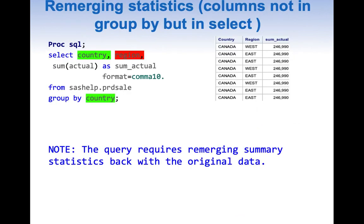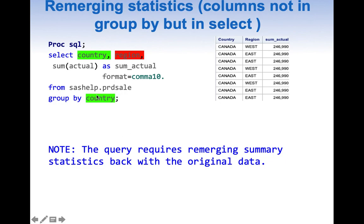Now let us understand re-merging summary statistics with GROUP BY. This happens when columns are not in GROUP BY but they are in SELECT. In this example, we are doing SELECT country, region, and also applying an aggregate function on actual from sashelp.prd table GROUP BY country. Only country is in both GROUP BY and SELECT, but region is an extra column that does not belong to GROUP BY. When we run this kind of query, the aggregated value is repeated and we get a note saying the query requires re-merging summary statistics back with the original data.